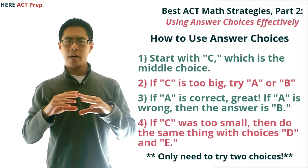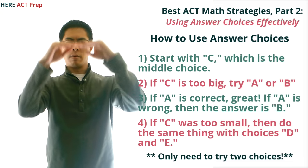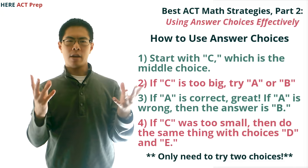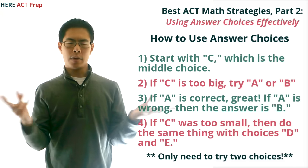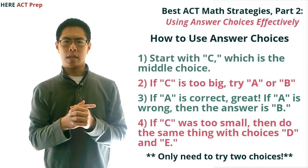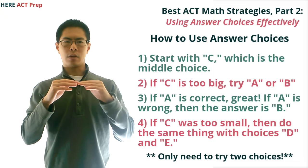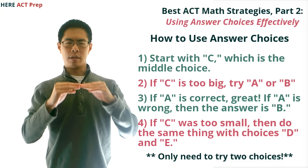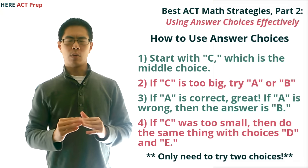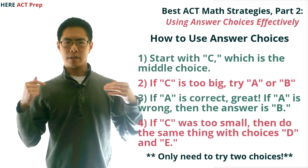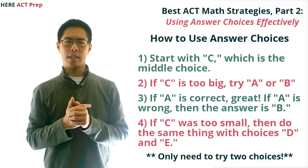If C ends up being too big, then we know the answer needs to be either A or B, then we just need to pick either A or B to plug in. If it's right, then great. If it's wrong, then we know the answer is the other one. Likewise, if C ends up being too small, then we know the answer will be either D or E, so we pick one of them to plug in. If it's right, great. If it's wrong, then we know the answer is the other one.